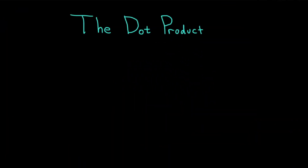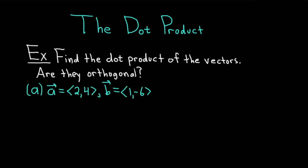Hi everyone. It's the Mathsorcer here with Chegg. In this video, we're going to discuss the dot product. Let's start with an example. Find the dot product of the vectors. Are they orthogonal?